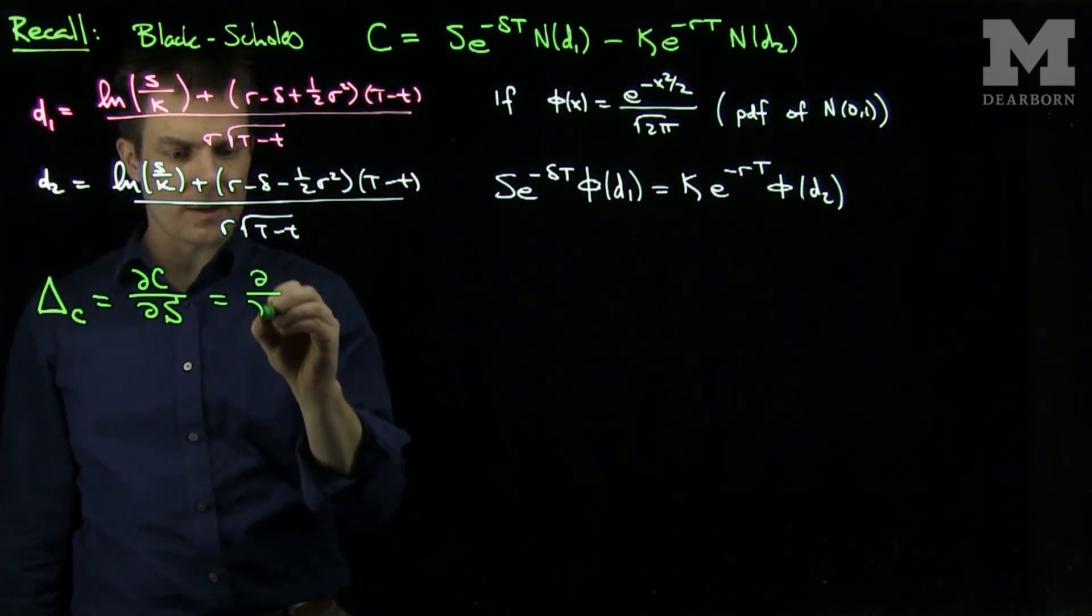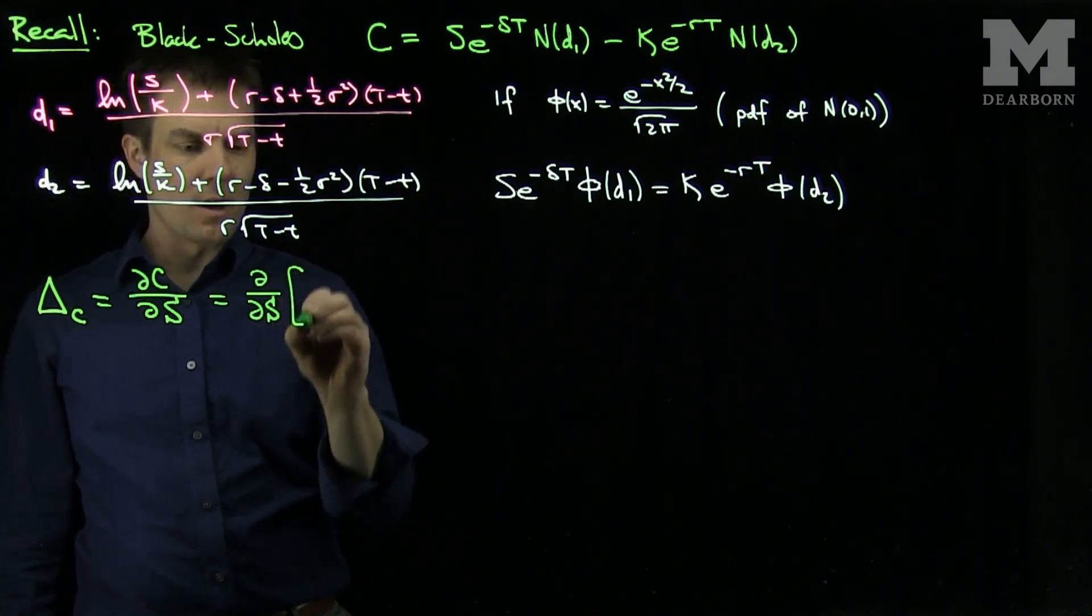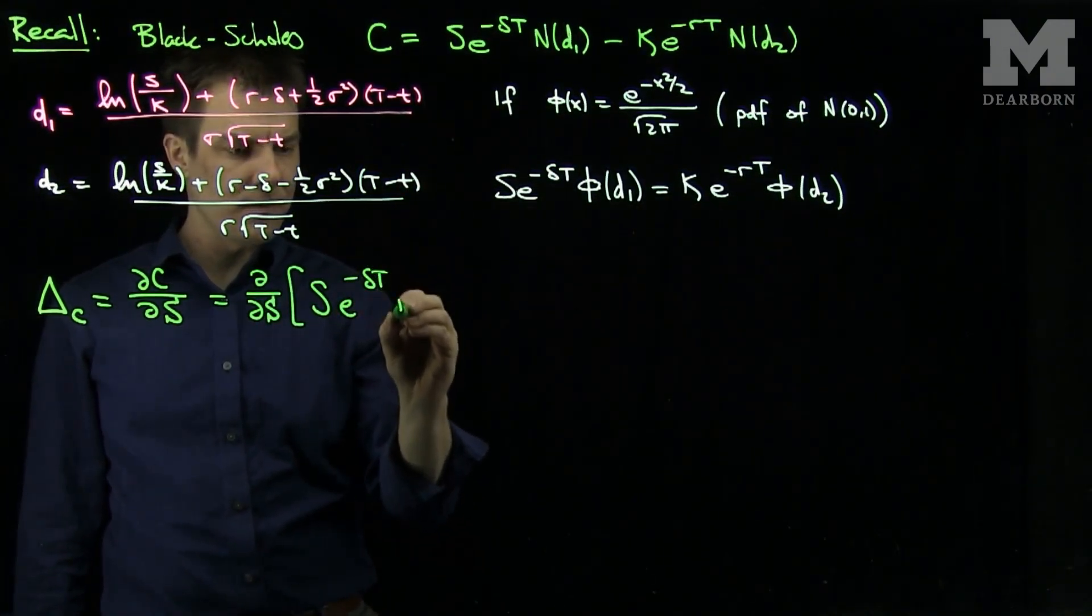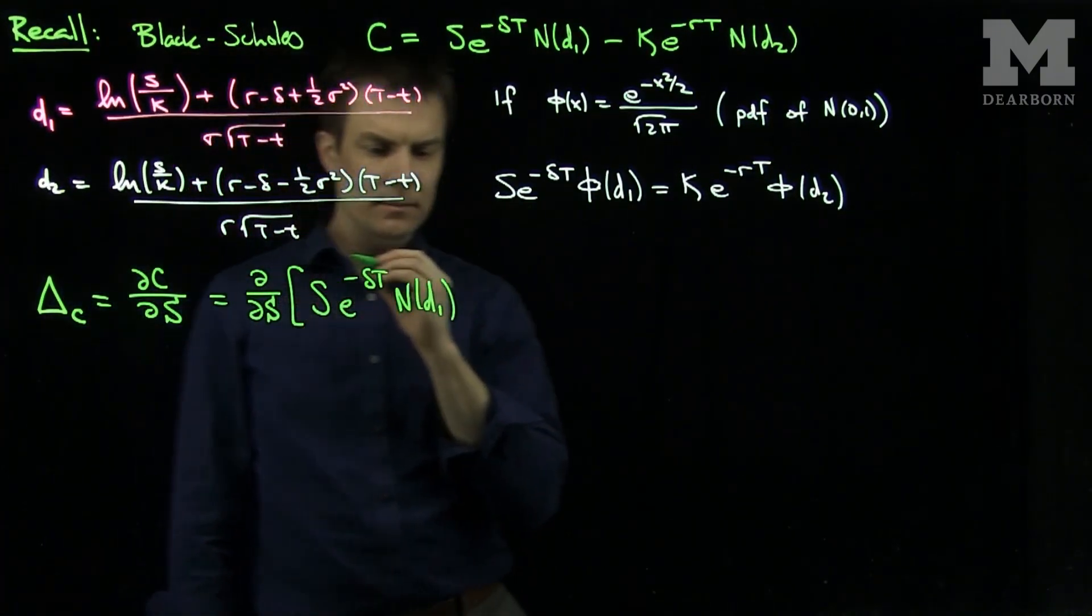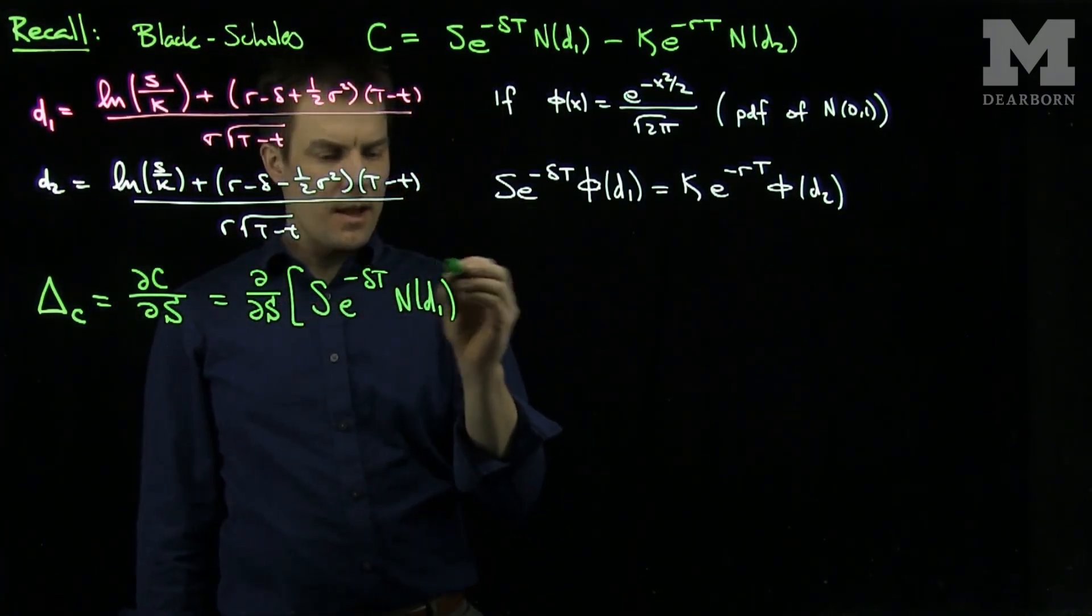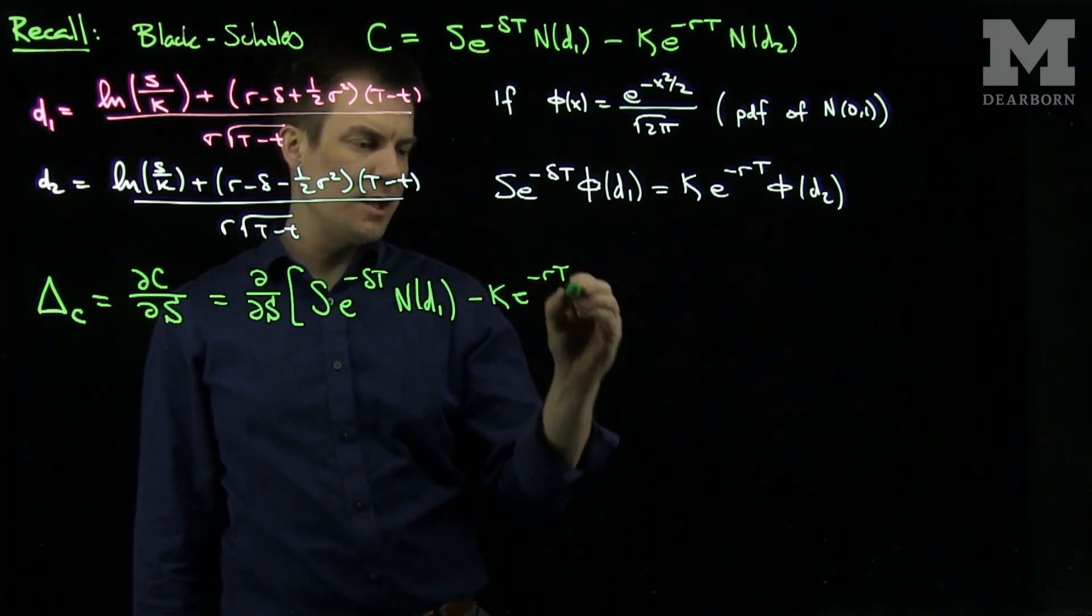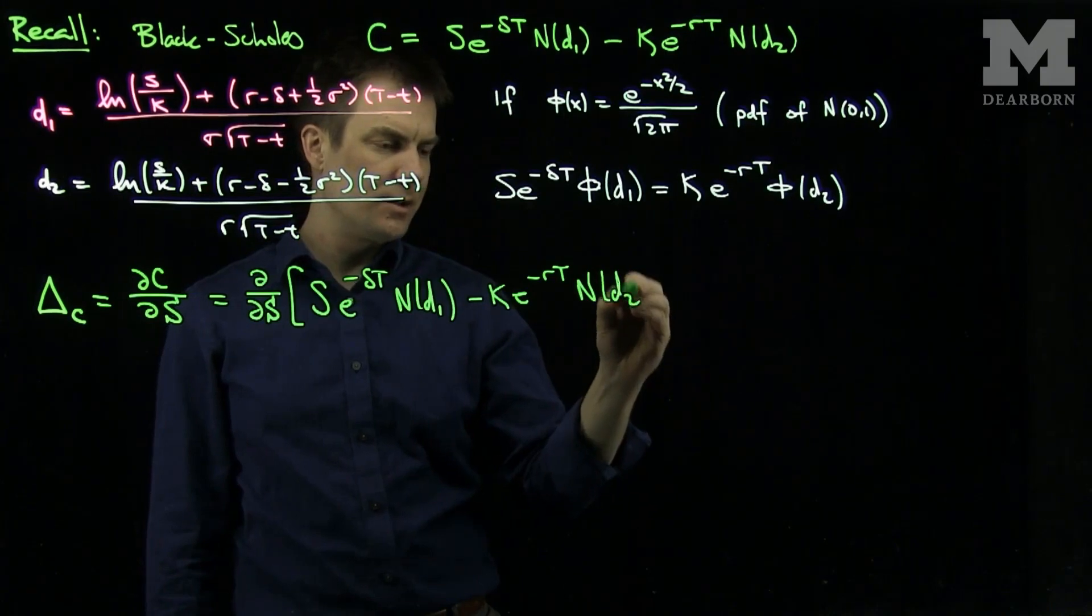So if we do the derivative of this formula, that would be the derivative with respect to s of s e to negative delta t n of d1, and then we'll have a minus k e to the minus rt n of d2.